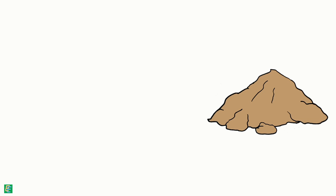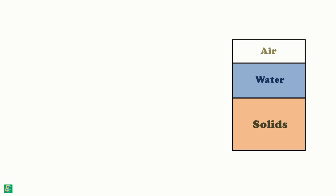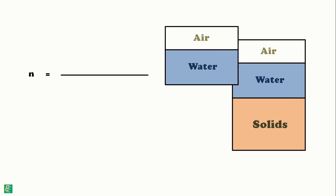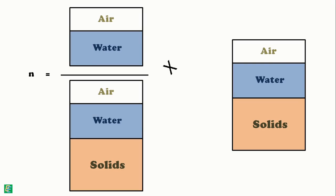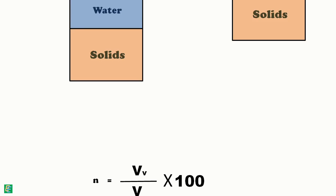We take a partially saturated soil sample and this is the phase diagram representing it. Porosity, which is denoted as small letter n, of this soil sample is defined as the ratio of the volume of voids this soil sample contains to the total volume of the sample and is expressed as percentage.